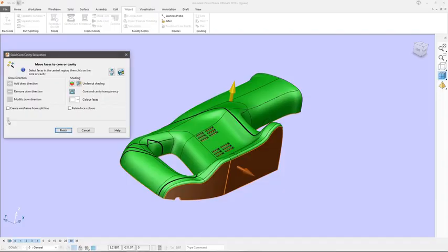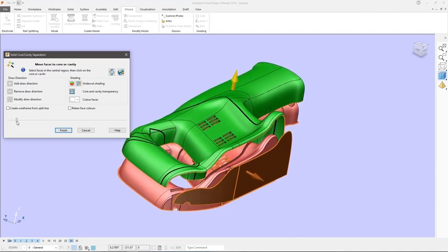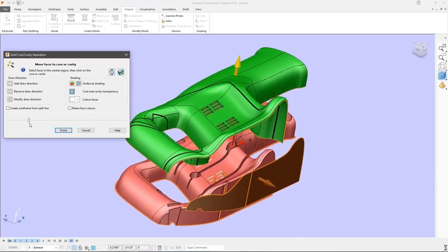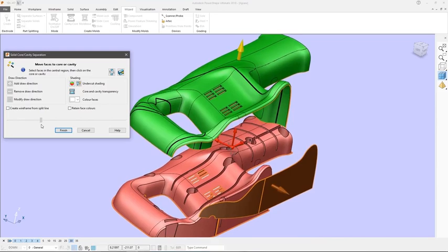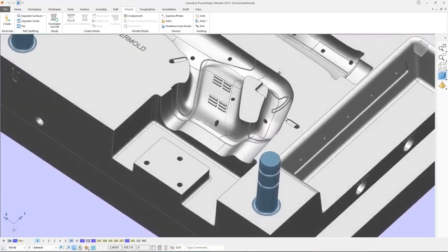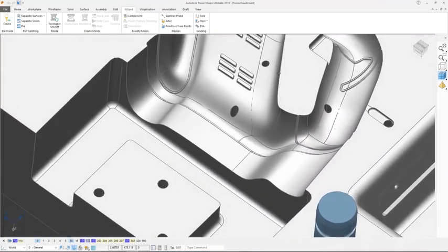When creating cavities, cores and slides from a 3D part, PowerShape guides you through an easy-to-use wizard. In most cases, the shutouts and split faces are created fully automatically, leaving you with minimal work to do to create the finished mold.